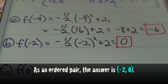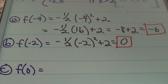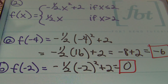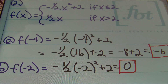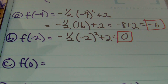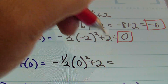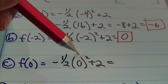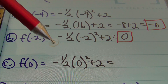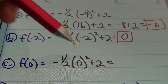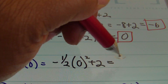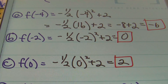For part c, x equals zero. Zero is less than or equal to two, so we use the first part. Plugging in: negative one half times zero squared plus two. Zero squared is zero, and zero times negative one half is still zero. Zero plus two equals two. The answer is two.